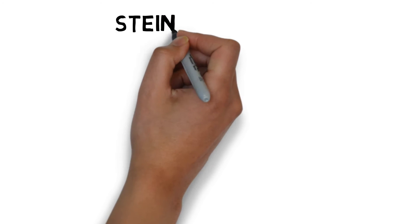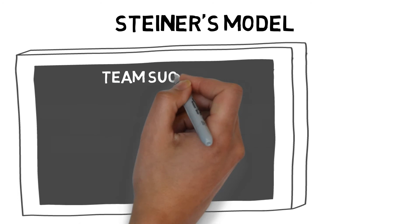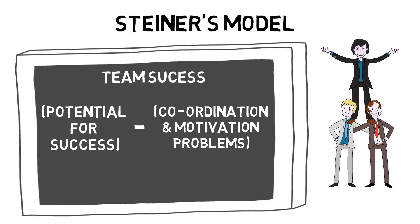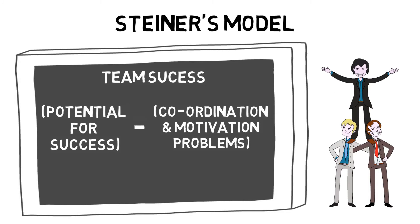Steiner's model suggests that team success equals potential for success minus coordination and motivational problems. Potential for success suggests that the members with the highest ability make the best team, and individual success usually means team success. Coordination problems occur when there is a high level of interaction between players but one or more members are too selfish or aggressive and the overall team performance suffers. Motivation problems occur when one or more members work less than the rest of the group, such as in a scrum or in a rowing team.